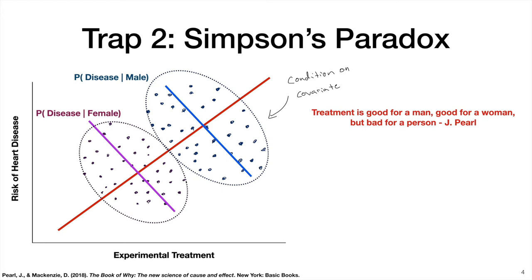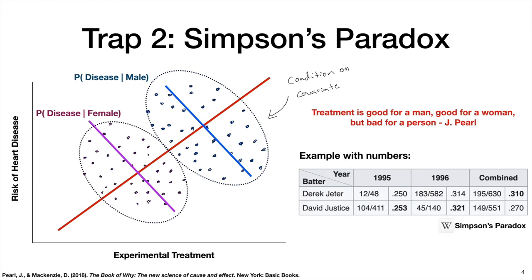So this is summarized nicely by a quote from the man himself, Judea Pearl, who said, we have a treatment that's good for a man, good for a woman, but bad for a person. Here's another example of Simpson's Paradox, but with numbers. I took this from the Wikipedia page on Simpson's Paradox. So here we have batting averages of Derek Jeter and David Justice over the years 1995 and 1996. So if you look at those two years individually, you see that David Justice has a better batting average. But if you were to combine those two years together, Derek Jeter has a better batting average. So again, how you look at your data, what variables you condition on, how you slice your data set, has an impact on the conclusions that you can make.